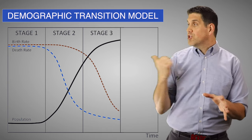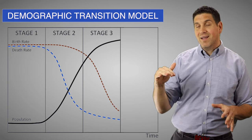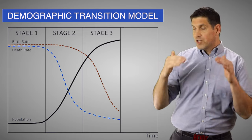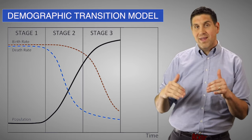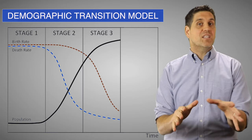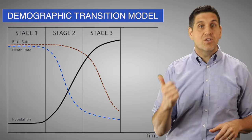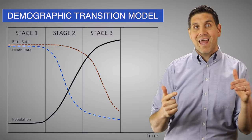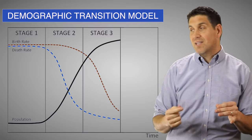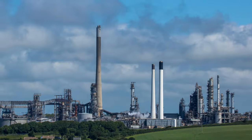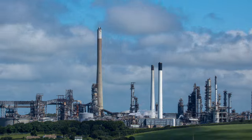This is Stage 3, when the population is still increasing but at a decreasing rate, because the fertility rate has fallen and people are having fewer kids. And advancements in production and trade led to higher living standards and a decrease in extreme poverty. This is the world of industrialized countries.